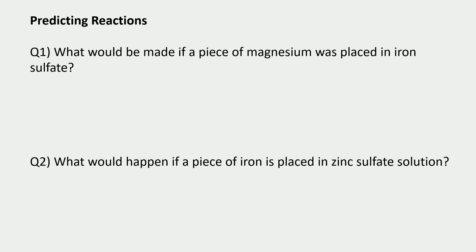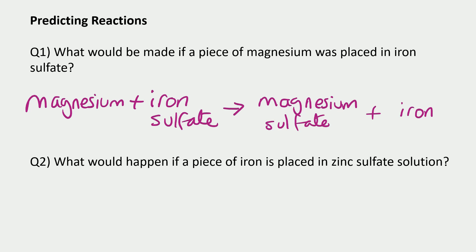We can use this knowledge to predict if there would be a reaction. So let's look at the first question. What would be made if a piece of magnesium was placed in iron sulfate? Well, the first thing we do is see where the metals are in the reactivity series. And magnesium is higher than iron. So that tells us magnesium is more reactive than iron. So in this case, magnesium can take the place of iron. It can displace iron. So we would get magnesium sulfate and iron is left on its own.